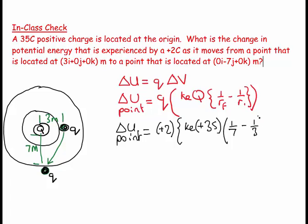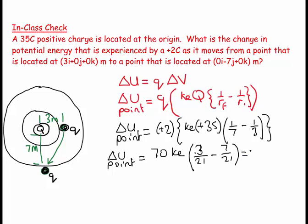Let's tidy up a little bit. ΔU_point equals 70·K_E times (3/21 - 7/21), which equals 70·K_E times (-4/21).